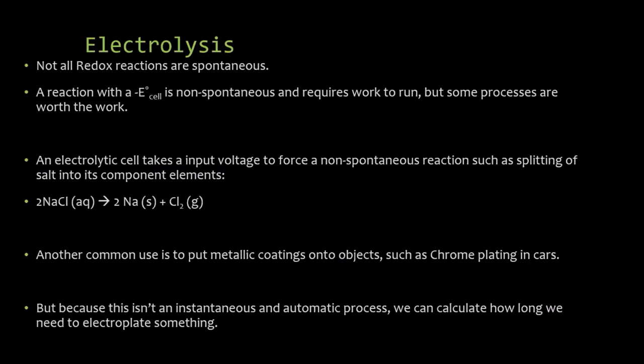So it is possible to have a negative E cell. It's just this is a non-spontaneous reaction and it will require work for it to run. But some processes are worth the work. Just the idea of like an electrolytic cell can take an input voltage to force a non-spontaneous reaction to react. Such as it is possible to split salt into its components at each electrode. You'd have to put some electricity in but it's possible to do this. This is the idea of how do you chrome plate an object. How do you put chrome plating on something? You take a chromium solution, you dip your object in there, you have electrodes attached to the object as it's dipped. I mean you have essentially wires attached to the object that's dipped in and you run the current through the object and it will, the chrome will deposit on the surface.